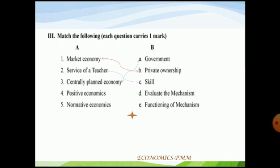Fourth item: positive economics. Positive economics studies economic things as they are — it tells us how the economy is functioning and how all factors of production are employed. Fifth item: normative economics. Normative economics not only studies what it is but also evaluates, passing value judgments on what is right, wrong, good, or bad — it studies what ought to be or should be. So the correct match for normative economics is 'evaluate the mechanism.'